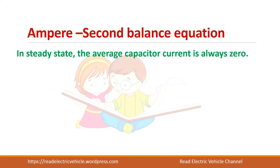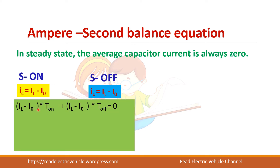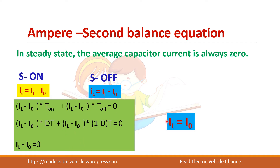Similar to inductance, we can write the ampere-second balance equation for the capacitor. Writing: I_on × T_on + I_off × T_off = 0. Simplifying, we get IL equals I0 — that is, the average inductor current equals the load current.